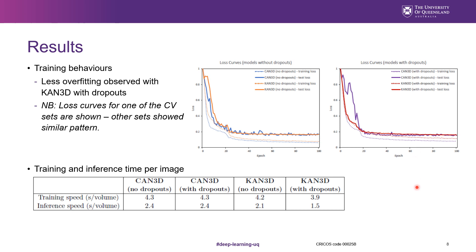Despite having additional operations, the proposed model had shorter training and inference time as shown in the table. By decomposing a large 3D image into a batch of smaller images, the Collidoscope Transform may have reduced the time required for convolution operations.